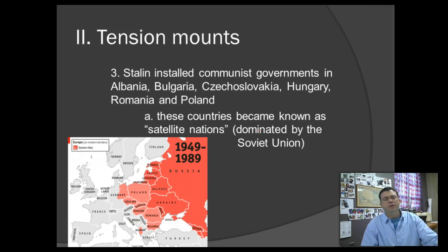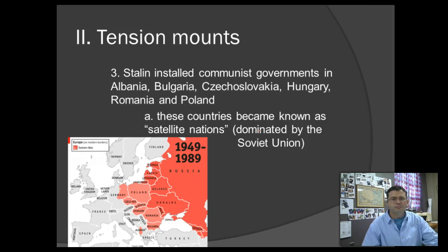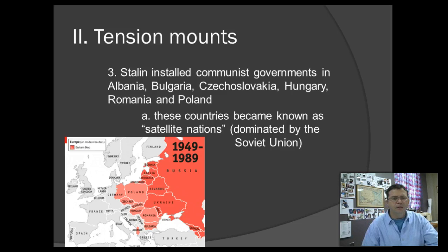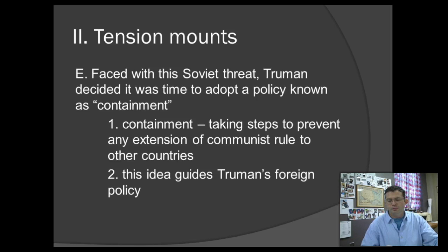With Truman standing in the way, Stalin is not able to get the reparations he hoped for. So the next best thing is to install Soviet-style governments in Albania, Bulgaria, Czechoslovakia, Hungary, Romania, and Poland — essentially the countries that had been controlled by Nazi Germany during World War II. These countries become known as satellite nations. With their development, Truman and Western Europe — England and France — have a fear of the spread of communism, which prompts Truman's new policy known as containment: taking steps to prevent any further extension of communist rule.